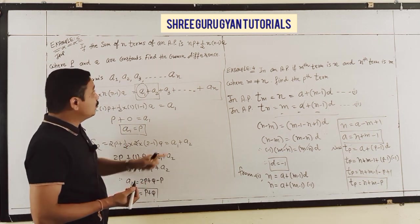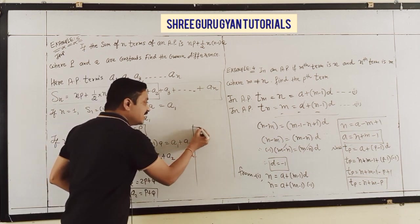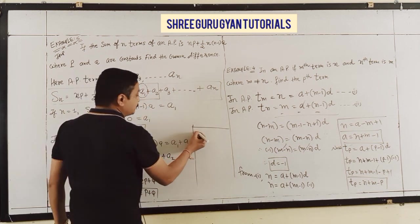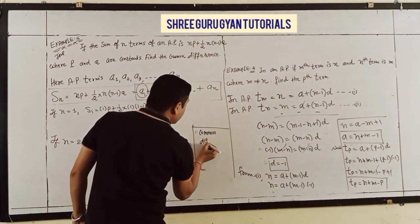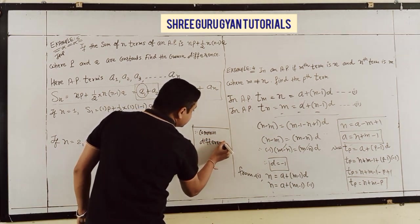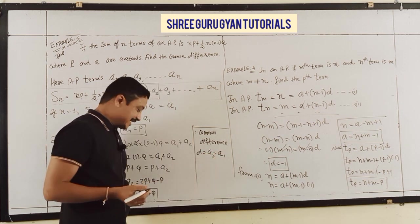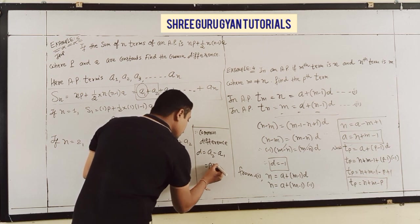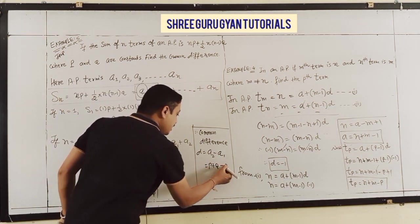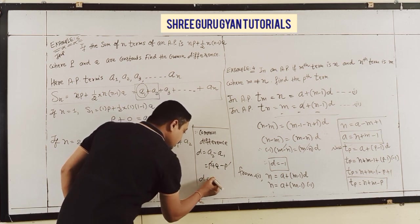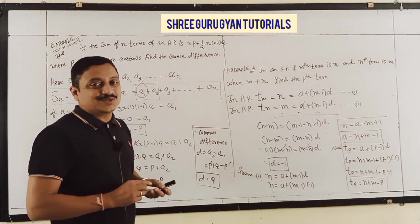Now the common difference D = A2 - A1 = (P + Q) - P = Q. Therefore D = Q. Example 5 is happily done.